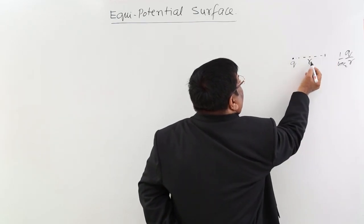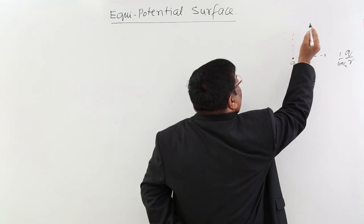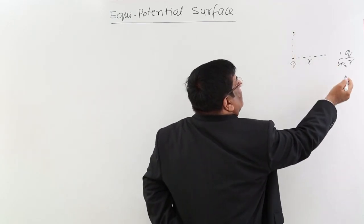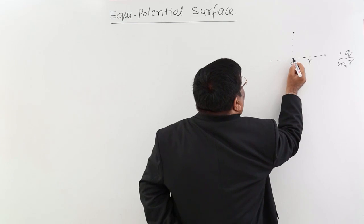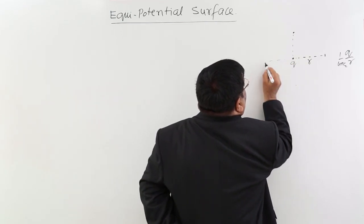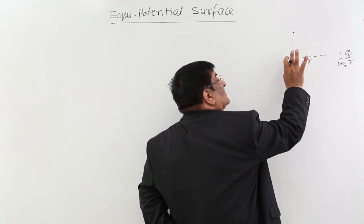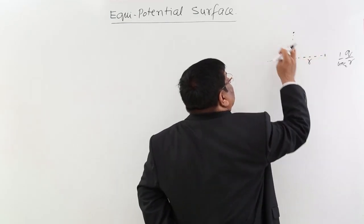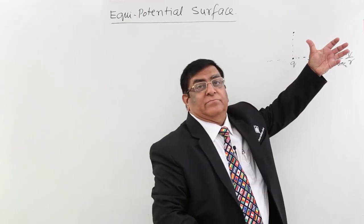If I go to distance r in any direction — this side, that side, inside, outside — everywhere the potential is the same, because the distance r is the same in every direction.